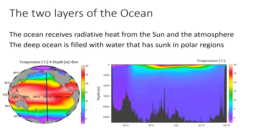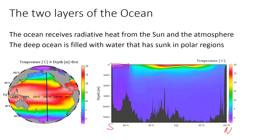We have this pole-to-equator temperature gradient. Looking at the depth structure on the right-hand side, we have a vertical slice of the ocean - this is Antarctica in the south and Alaska up in the north. You can see the ocean floor goes up and down; the ocean is quite deep in the Pacific for a variety of reasons.